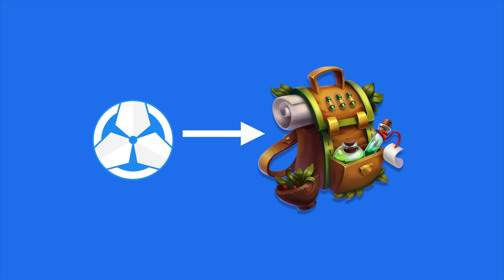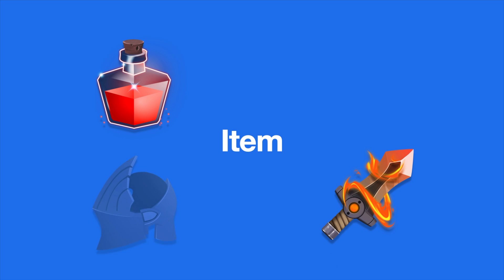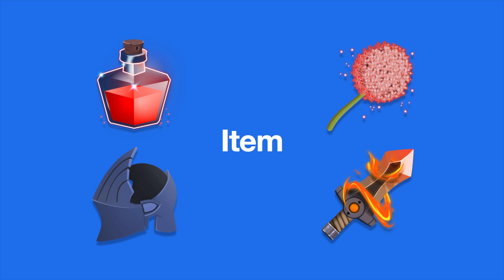Let's start with the basics: items. An item is the representation of an object that lives in the game. For example, an item can be a potion, a sword, a helmet, or even a flower.